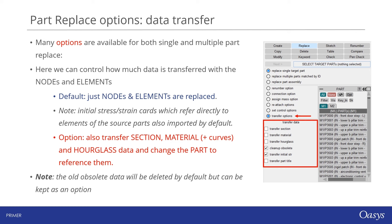Data transfer options: when replacing a part or multiple parts, we also have to decide how much of the part data to transfer from source to target. The default is that just nodes and elements are replaced, along with any initial stress and strain cards referring to elements in the source part. If any of the other options are selected, Primer will import these from the source model and change the target part to reference it. In the case of the material card, load curves will also be imported. Obsolete data is removed by default — that is, Primer will remove the original sections, materials, etc. from the target model if unused by anything else.